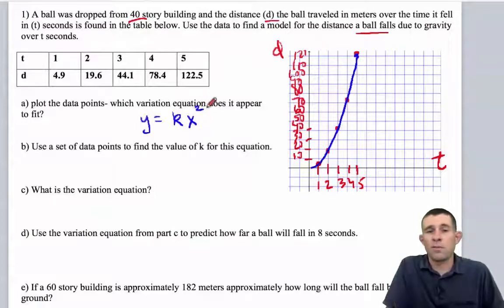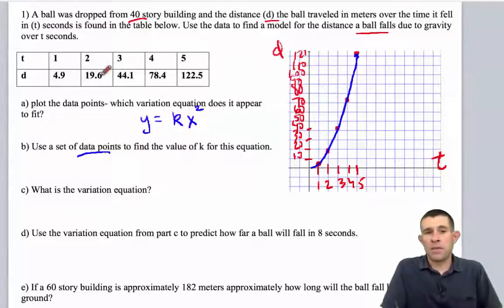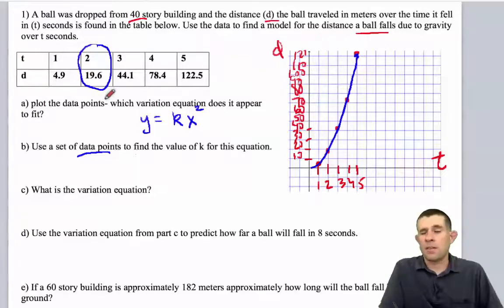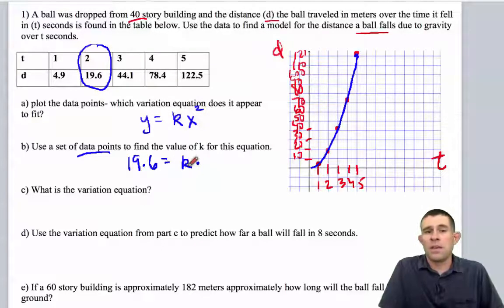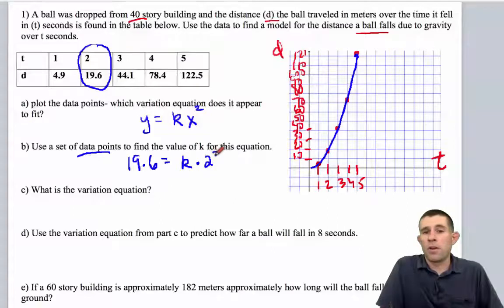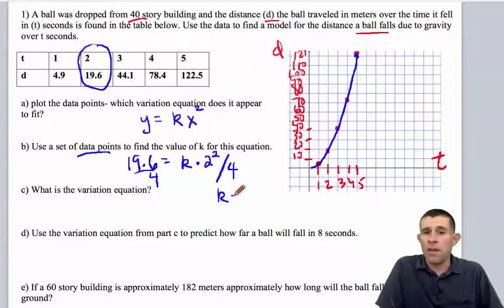So our next task here is to pick a data set. Let's take the point 2 and 19.6 and let's find the value for k. So 19.6 should be equal to when k is multiplied by 2 squared. Well, 2 squared is 4, so I'm going to divide 4 off of both sides. Now, the remaining value is k, which is equal to 4.9.